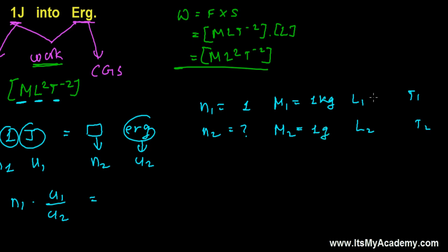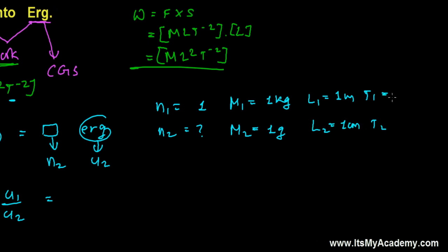Similarly in MKS system length is measured in meter, while in CGS system length is measured in centimeter and similarly if you go about the time then in MKS system time is measured in second and similarly in CGS also time is measured in second.